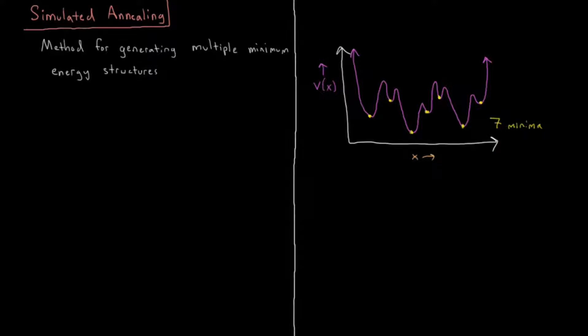In this video we discuss simulated annealing, which is another method to obtain minimum energy structures which differs substantially from all the other methods discussed thus far. Simulated annealing's most notable feature is that it is a method for generating multiple minimum energy structures.